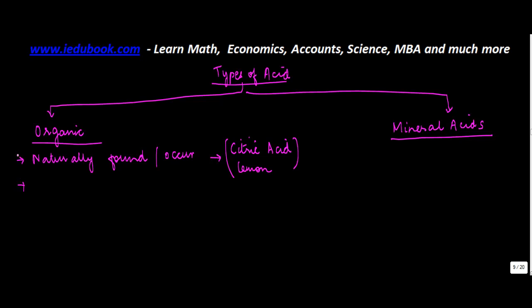Similarly, another common example is lactic acid. Where is it found? It is found in milk. So these are naturally occurring acids that we find in our day-to-day uses.